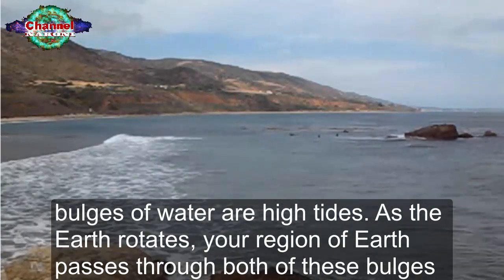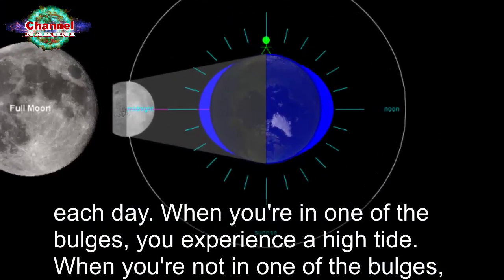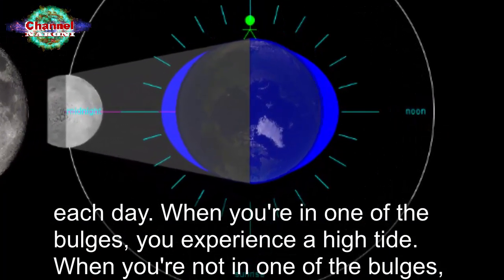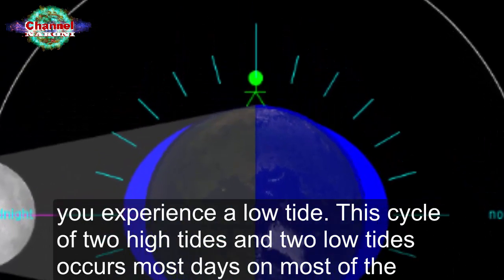As the earth rotates, your region of earth passes through both of these bulges each day. When you're in one of the bulges, you experience a high tide. When you're not in one of the bulges, you experience a low tide.